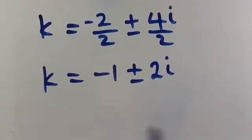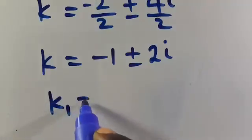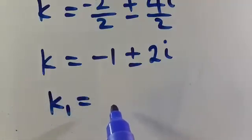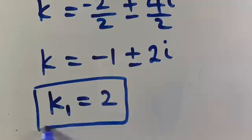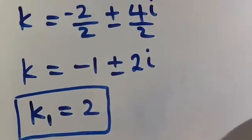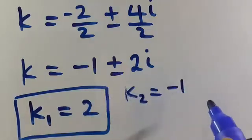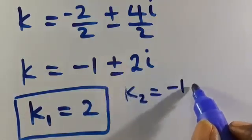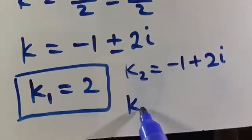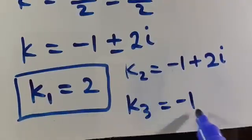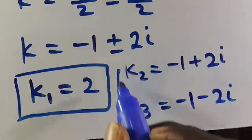So we have three solutions: the first real solution is k₁ equals 2. The second solution is k₂ equals minus 1 plus 2i. The third solution is k₃ equals minus 1 minus 2i.